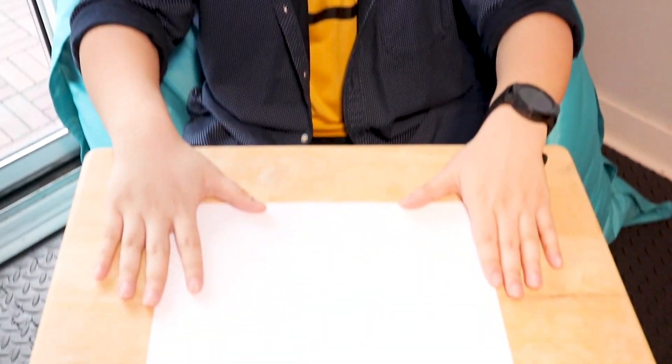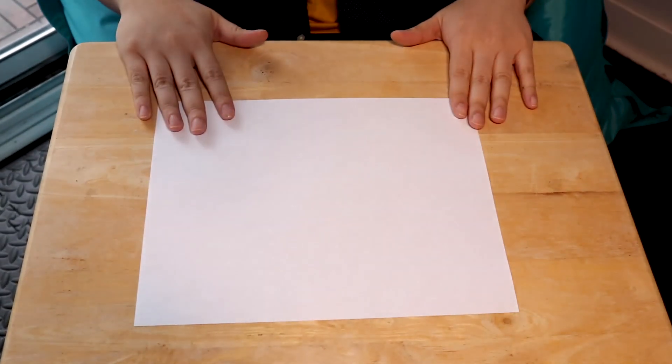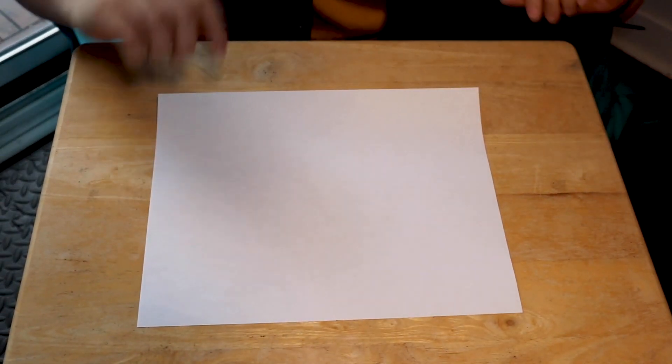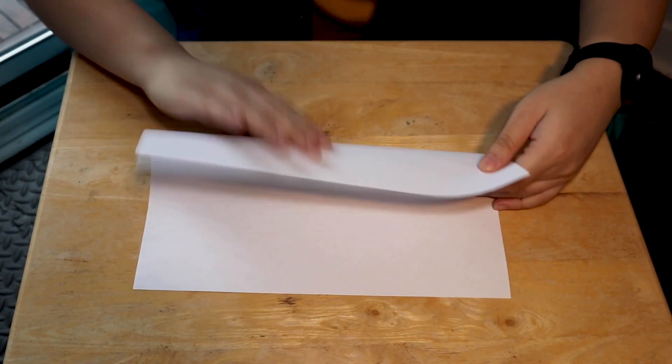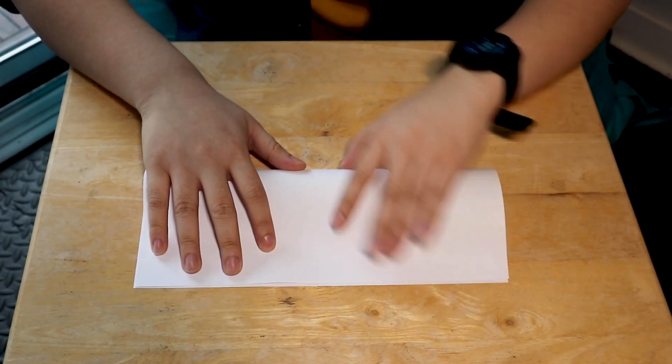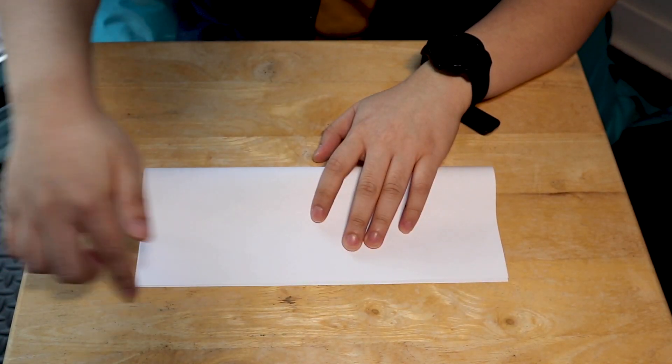Take a look down here. Here we have a beautiful blank sheet of paper. First step, we are going to fold it hot dog style. And that just means that the longest side is the part on the outside.